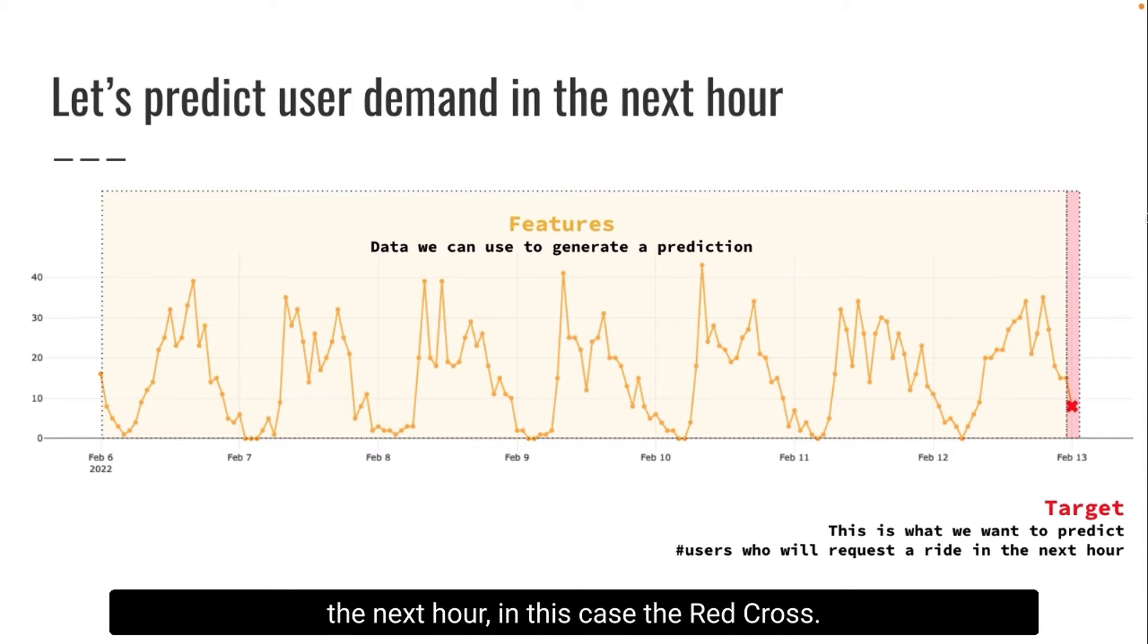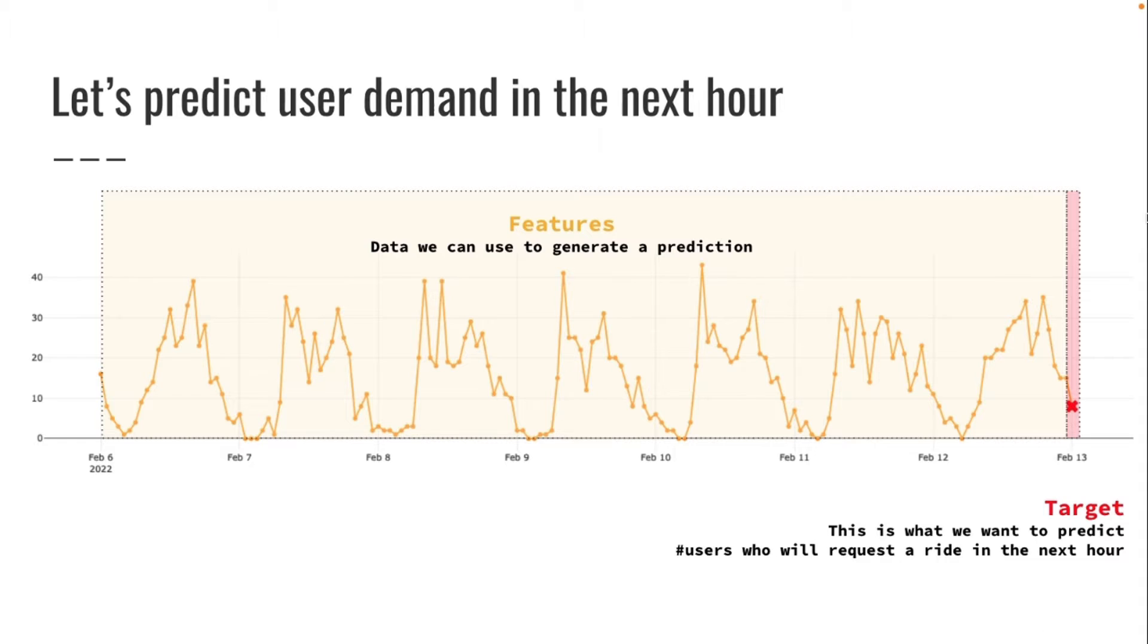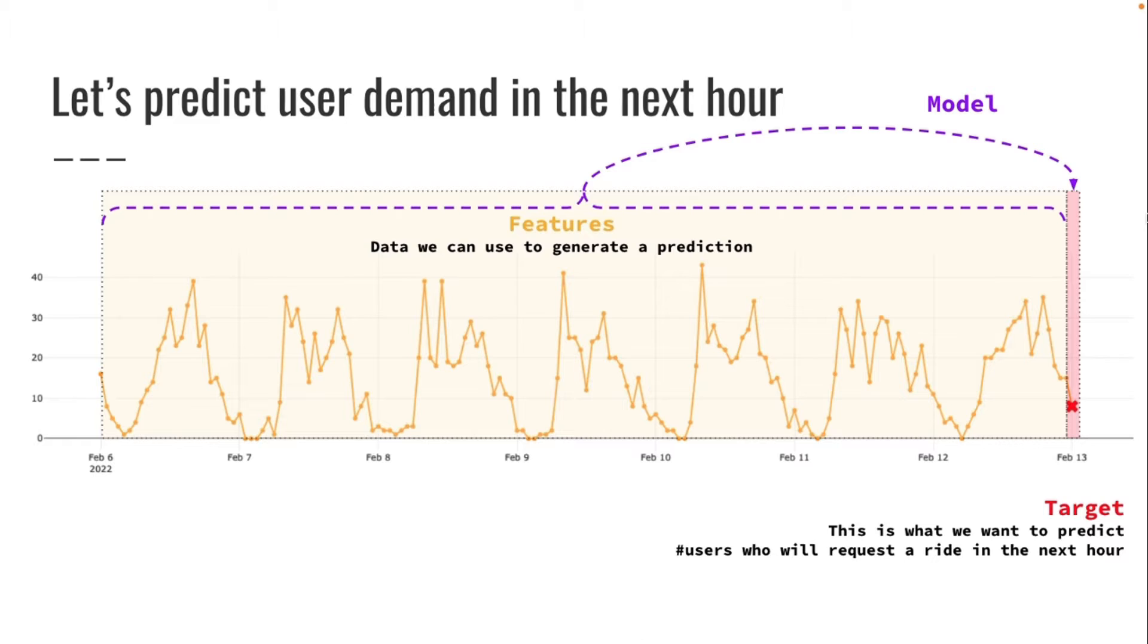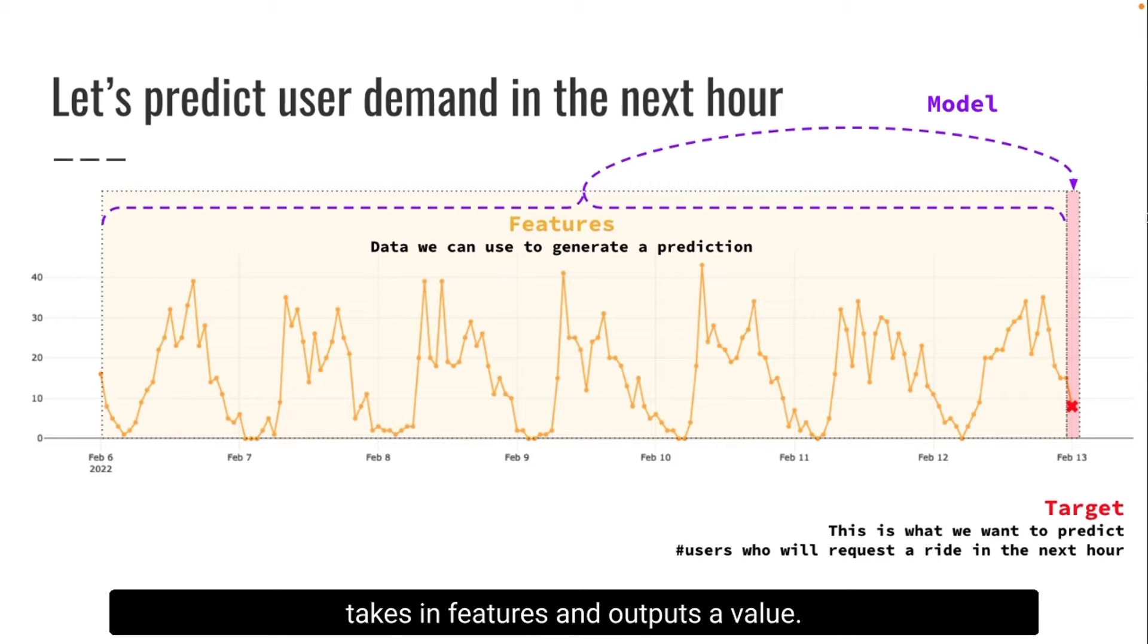In this case, the red cross. And the model is just a function that takes in features and outputs a value, and we want the model to output values that are as close as possible to the target, to the real ones that we observe.